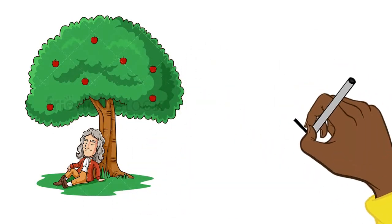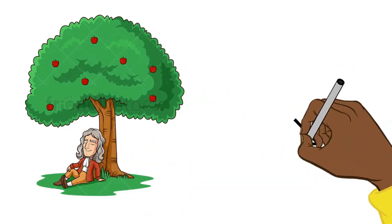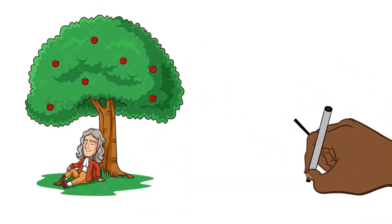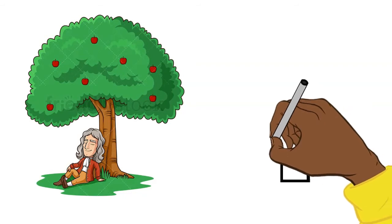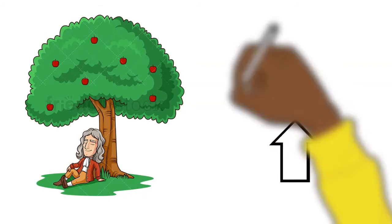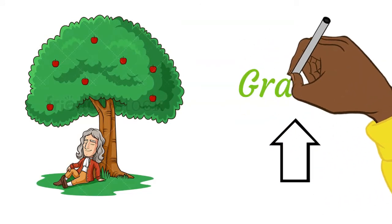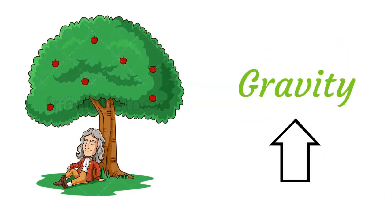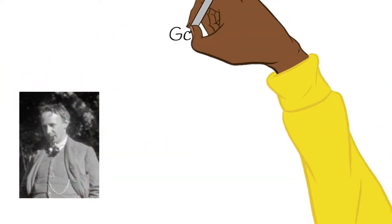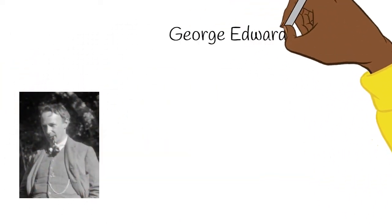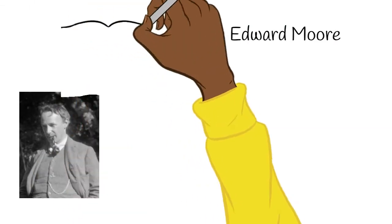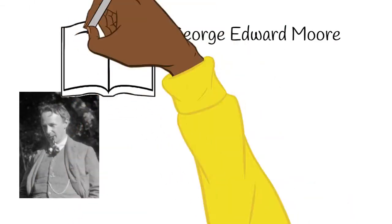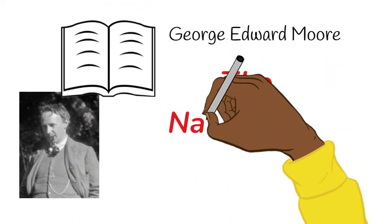So what does this have to do with science? Just how we measure and prove scientific experiments, we must do the same with morality, using observations and empirical evidence. However, some would argue that naturalism is flawed, and this is best exhibited through the naturalistic fallacy proposed by G.E. Moore.